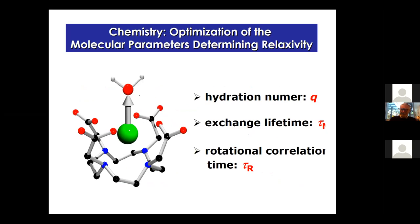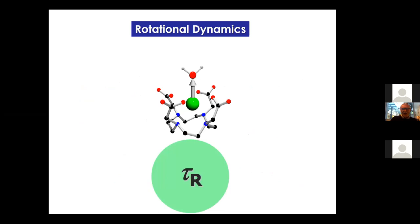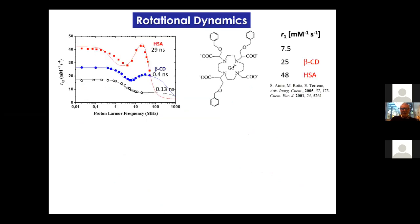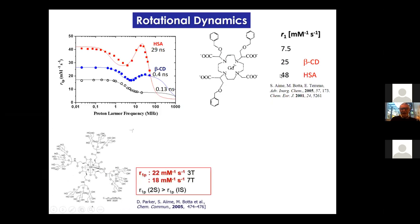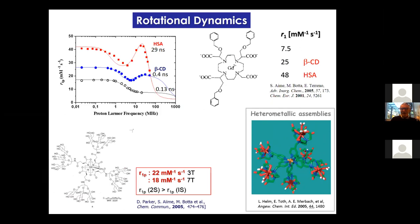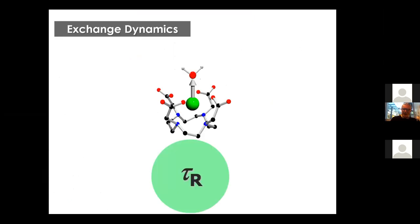To do molecular imaging, there is the need to increase relaxivity — essentially the work of chemists — accompanied by use of field cycling relaxometry to identify and optimize all the determinants of relaxivity. The main determinant one may control is tau_R, the molecular reorientation time. If we take a gadolinium system with hydrophobic substituents such as phenyl groups on the surface, they may interact with beta-cyclodextrin or albumin, and the simple formation of a supramolecular adduct generates a huge increase in attainable relaxivity, passing from 7.5 to 25 to 48. Field cycling relaxometry was fundamental for that purpose.